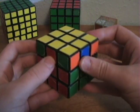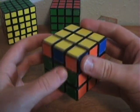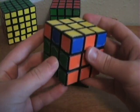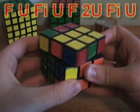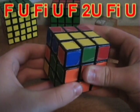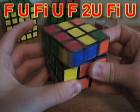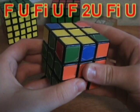When this happens, position the cube so that any face faces towards you and then just do the algorithm. F U F I U F 2 U F I U.